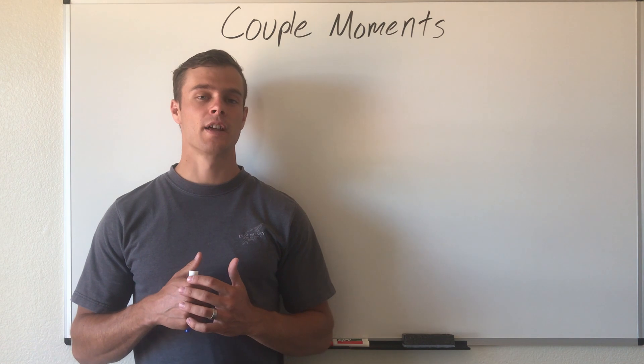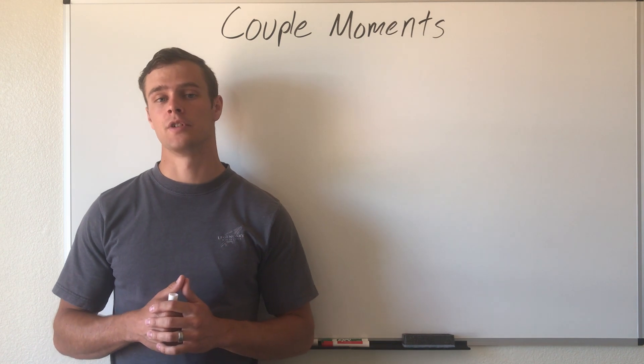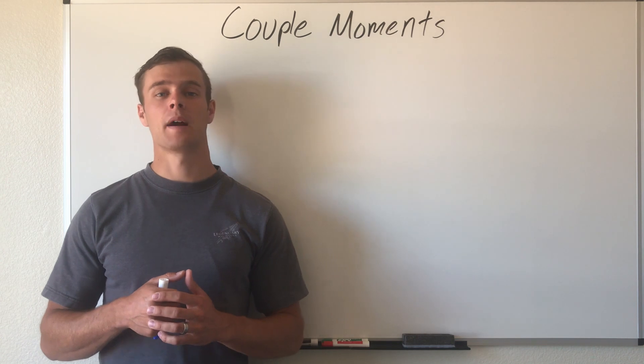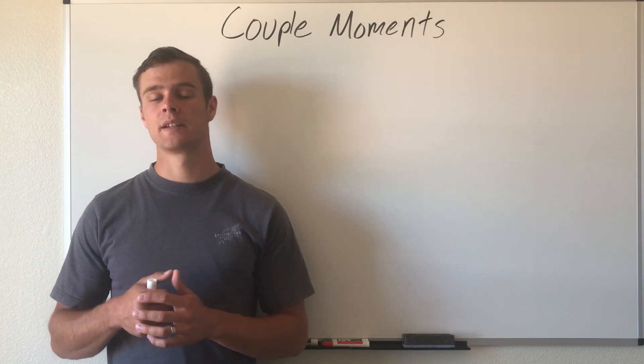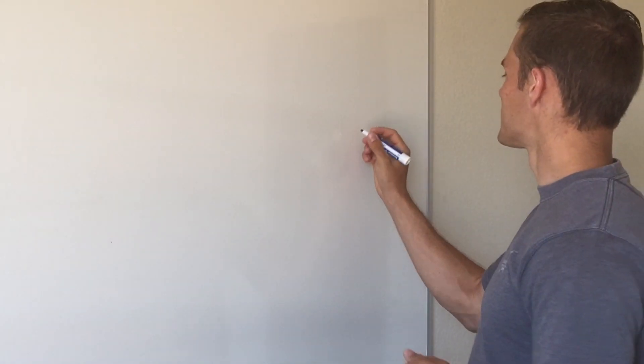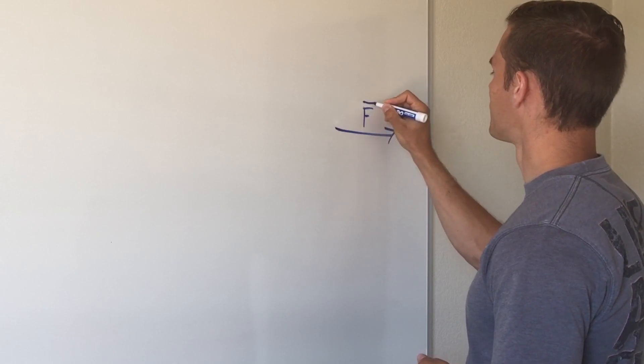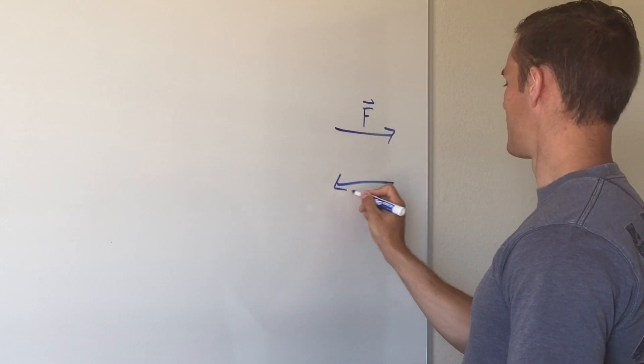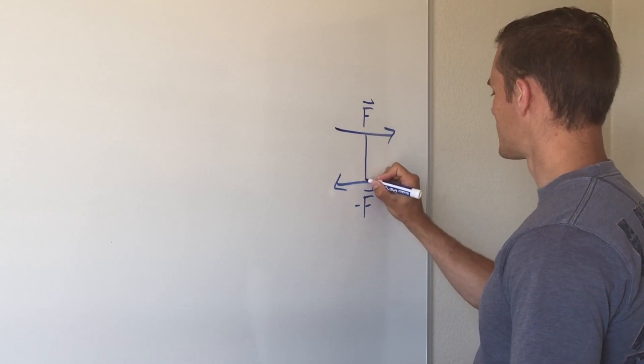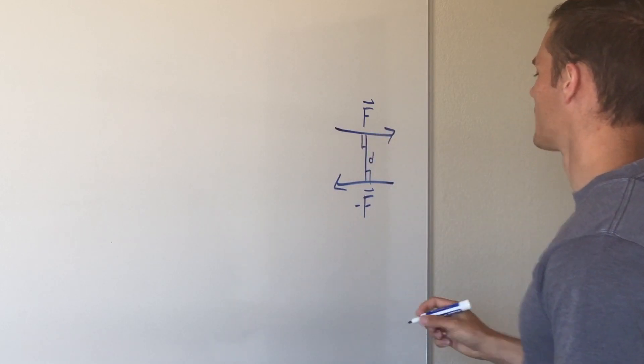So what we need to understand first is that a couple in statics is two forces that are parallel to each other and equal in magnitude but opposite in direction. They are separated by a distance d that is perpendicular between the two forces. That can be shown as a force, we'll call it force F, and another force going the other way we'll call it negative F, and our distance d, and we'll show that they have right angles coming off like that.